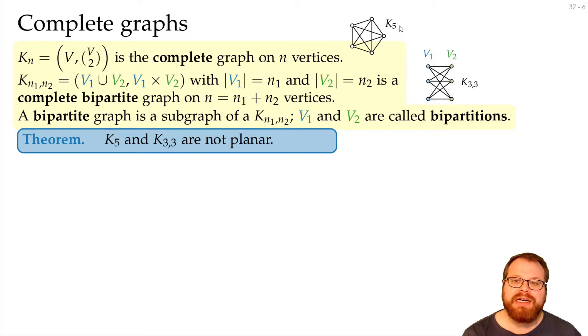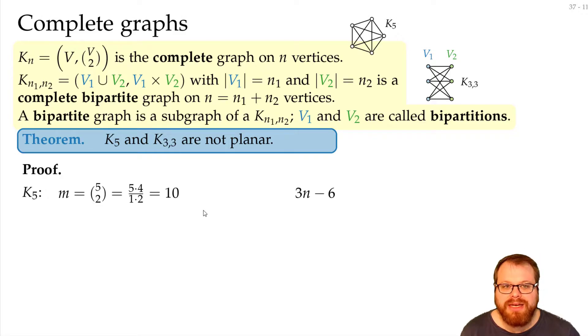For k5 this is quite simple. We can just apply Euler's polyhedra formula. How many edges do we have? We have 5 vertices, each is connected to each other, so we have 5 choose 2, which is 10 edges. Euler's polyhedra formula tells us we have at most 3n minus 6 edges, which here is 15 minus 6, which is 9. So this does not hold, and we know this is not a planar graph.